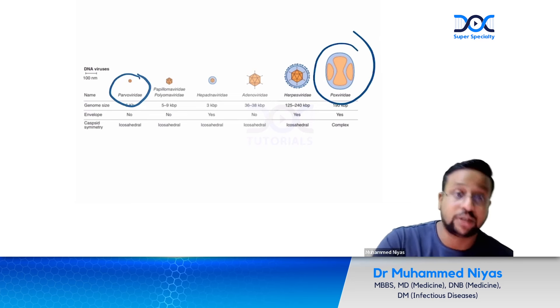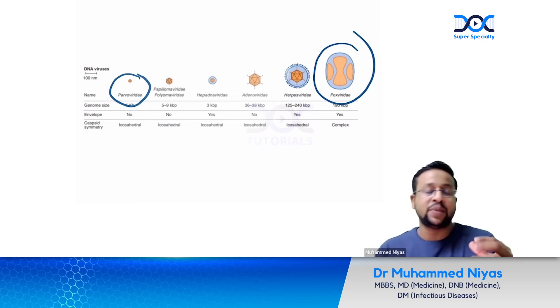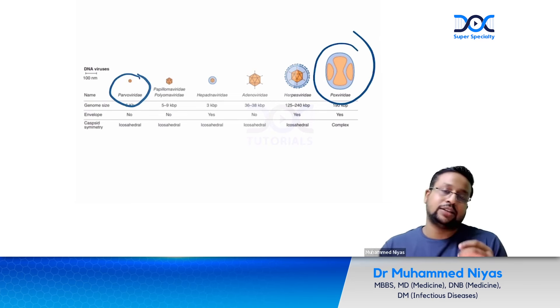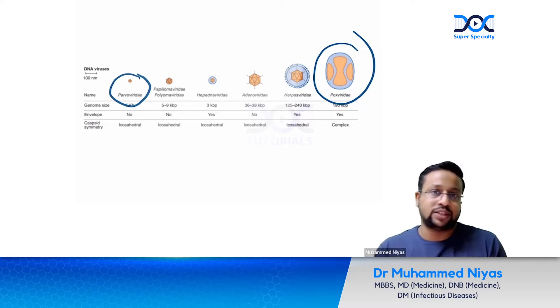In the DNA viruses, we have the smallest virus which is called the parvovirus, through to the largest virus which is called the poxvirus. We know that the poxvirus is creating issues with the monkeypox.